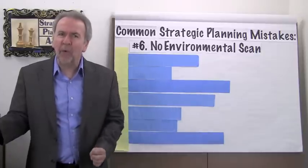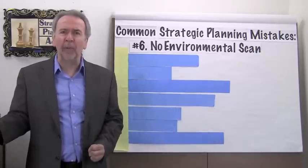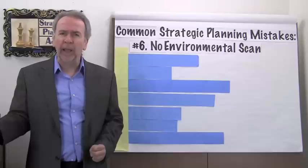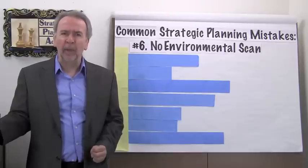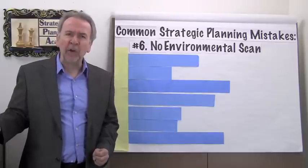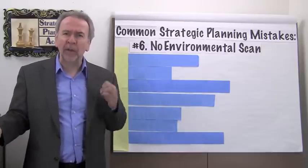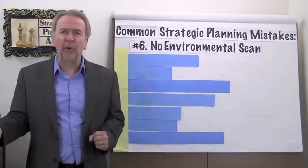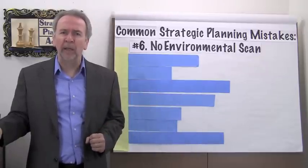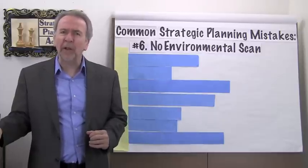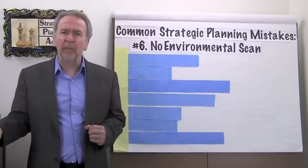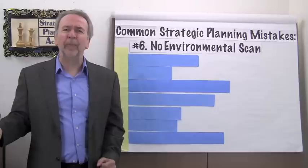Not having a way to scan the future environment to see what's coming can get you into deep trouble. It happened to Bill Gates. Microsoft dominated the early software industry and just about everyone used Internet Explorer as their browser of choice. Doesn't it seem logical that they should also dominate the search engine business? So how did Google get ahead of them?